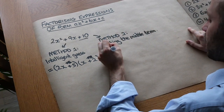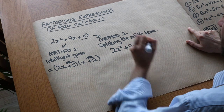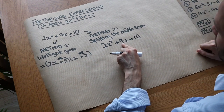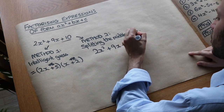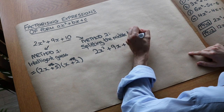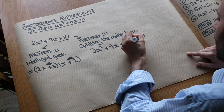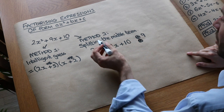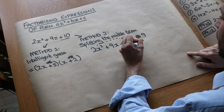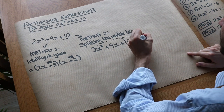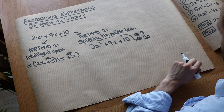Let me write it out again. In the previous video when we didn't have a number in front of the X squared, we found two numbers which added to give the middle number and multiplied to give the last number. Now it's very similar — we again find two numbers that add to give the middle number 9. But instead of multiplying to give the last number, we find two numbers which multiply to give the first times the last number: 2 times 10 is 20.